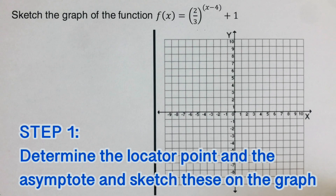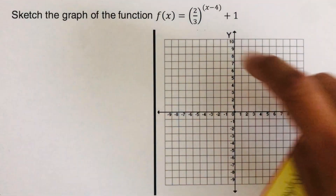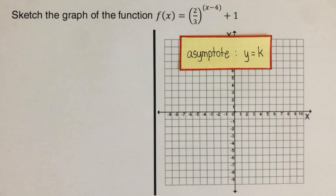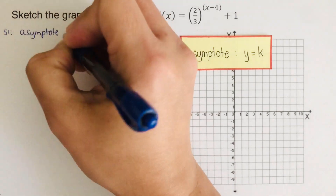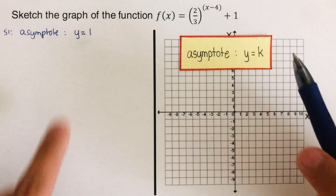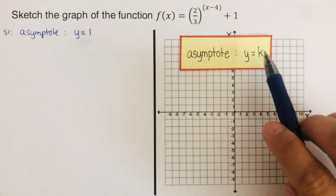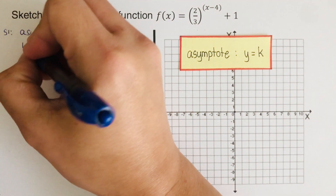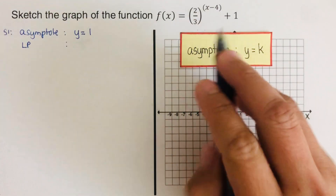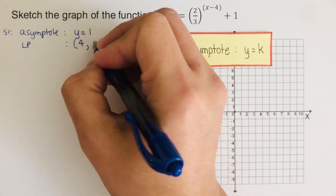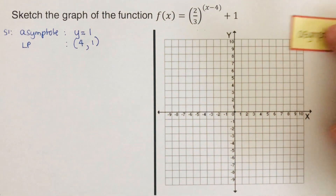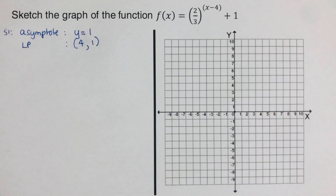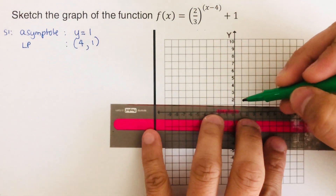Step one again: determine the locator point and asymptote. The asymptote is y equals k — in this problem k equals one, so the asymptote is y equals one. The locator point uses switch and keep on h: that gives us (4, 1) as our locator point. We go ahead and sketch these on the graph, drawing the asymptote at y equals one.